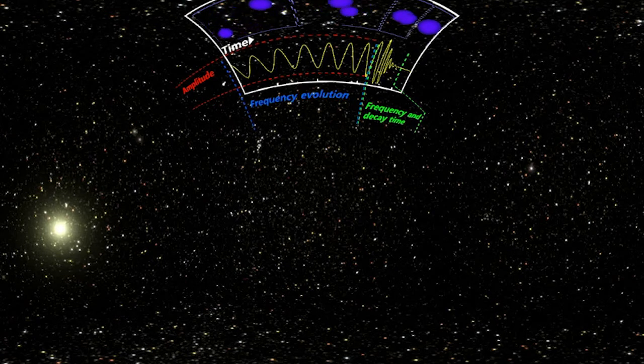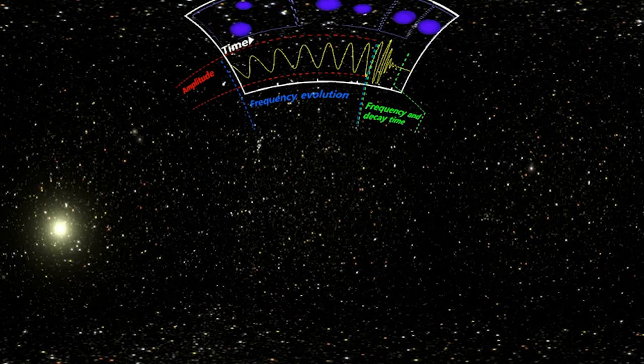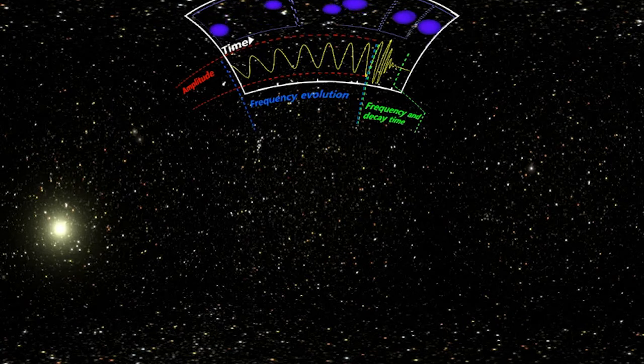So in this fraction of a second, three times the mass of our sun was radiated away as gravitational wave energy. It was a very, very powerful collision.